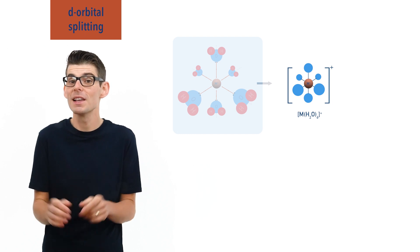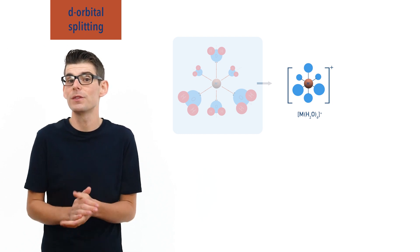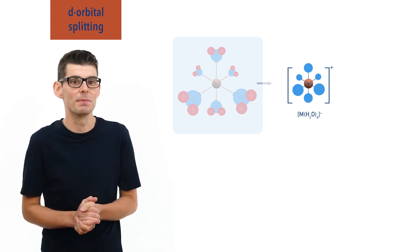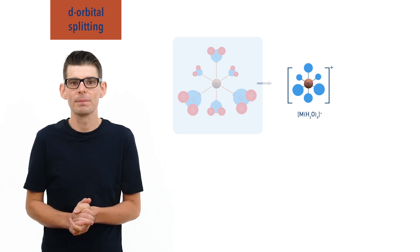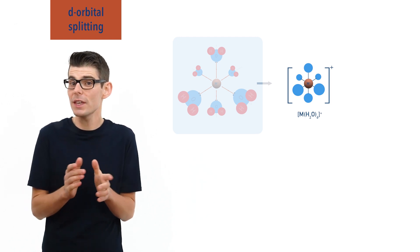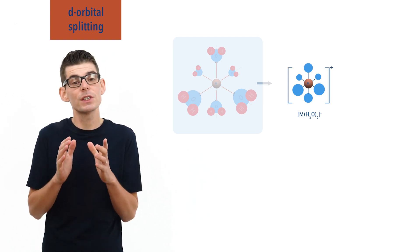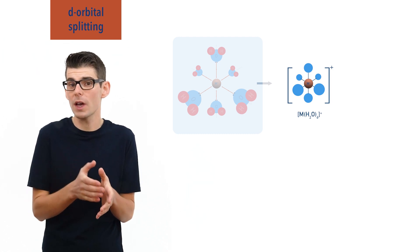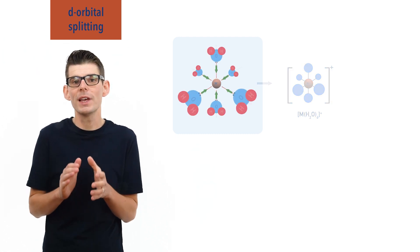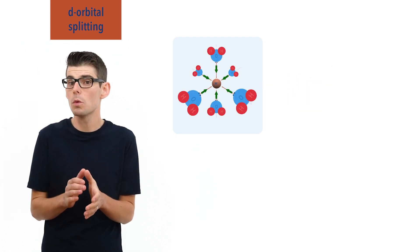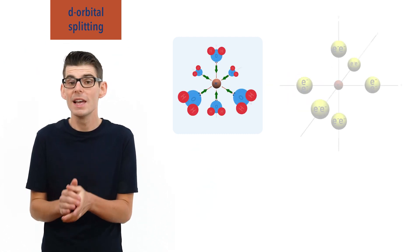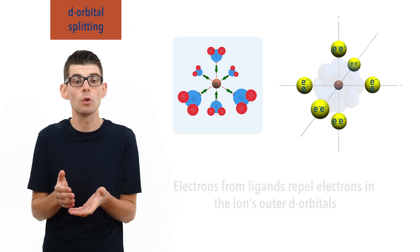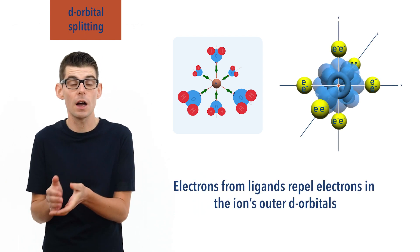If you're unsure about this, please check the video on complex ions — link in the description below. Now, the interesting thing here is that as the water molecules or ligands approach the ion, the electron pairs forming the coordinate bonds can interact with electrons in the outer D orbitals of the ion.